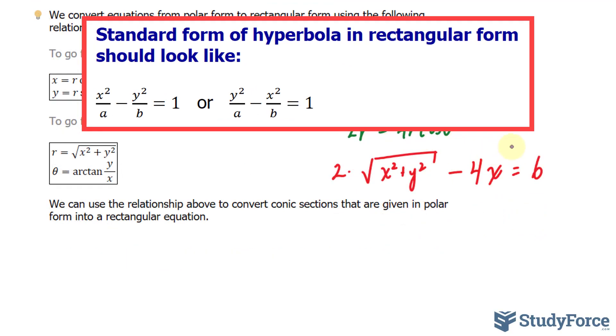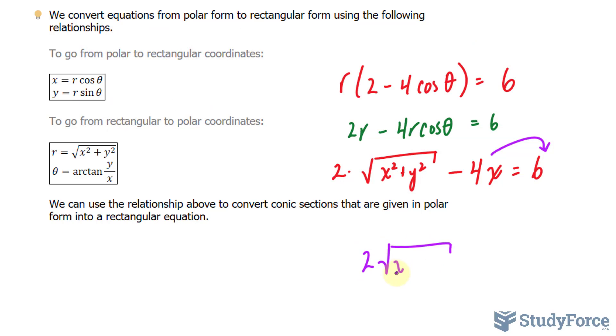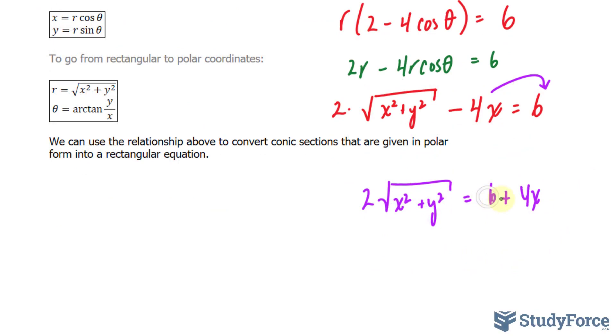Next I'll take this negative 4x over here where I have 2 times the square root of x squared plus y squared is equal to 6 plus 4x. Factoring out a 2 from these two terms gives me 2 bracket 3 plus 2x.